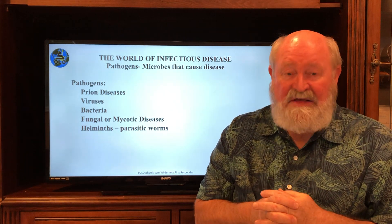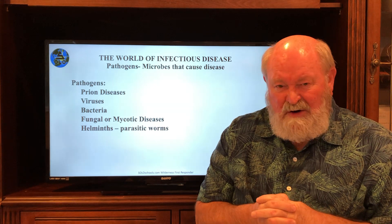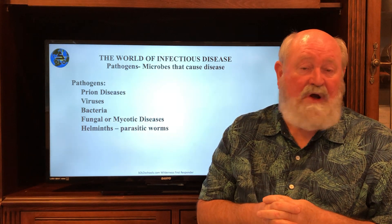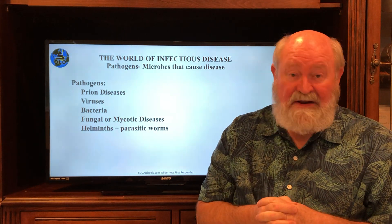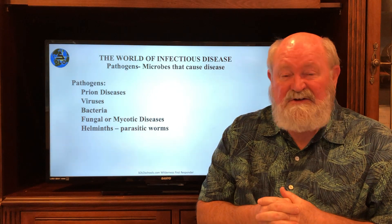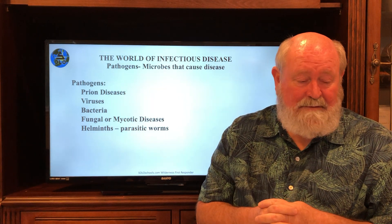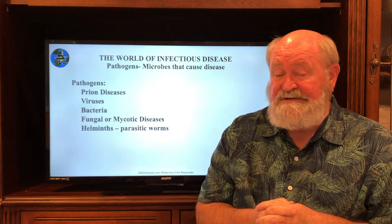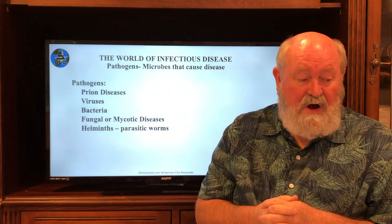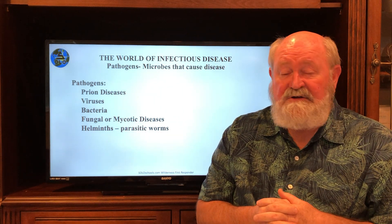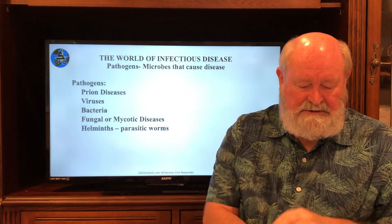In the world of pathogens, they break them down into five simple categories: prion diseases, viruses, bacterial infections, fungal and yeast infections called mycotic infections, and finally helminths or parasitic worms. All of these are single-cell organisms with the exception of the helminths, which are multiple cells.